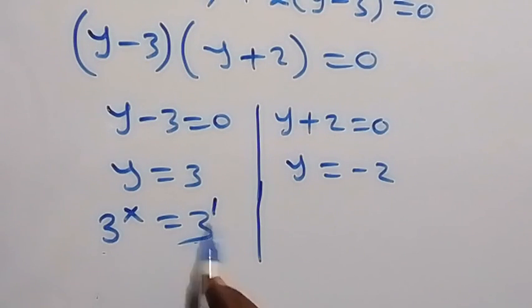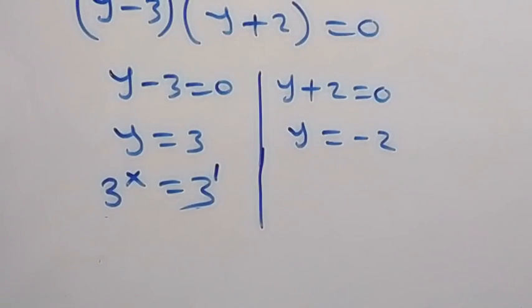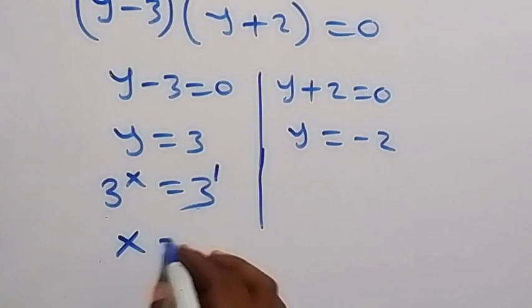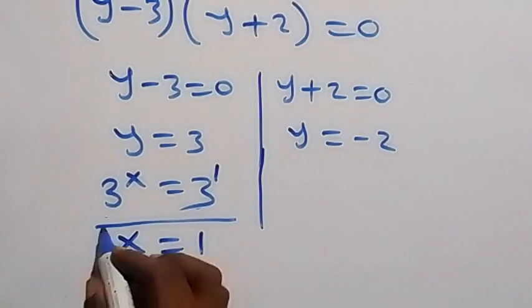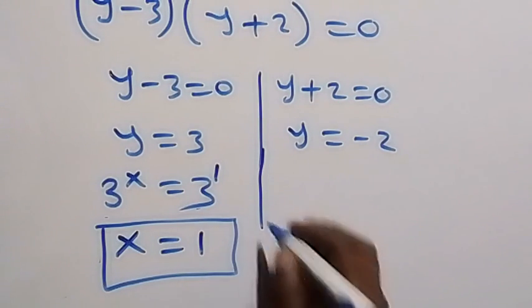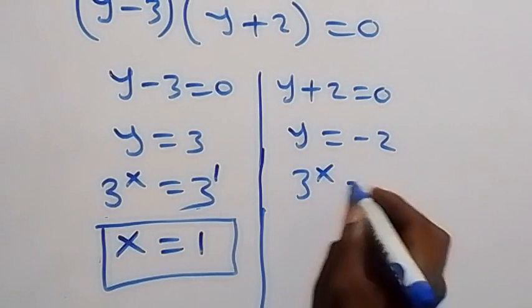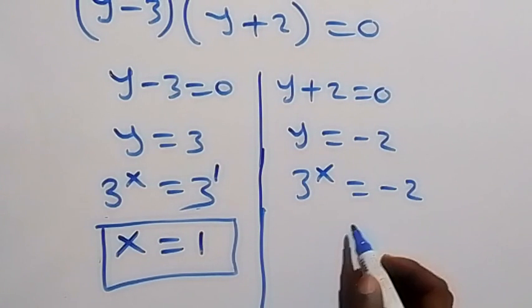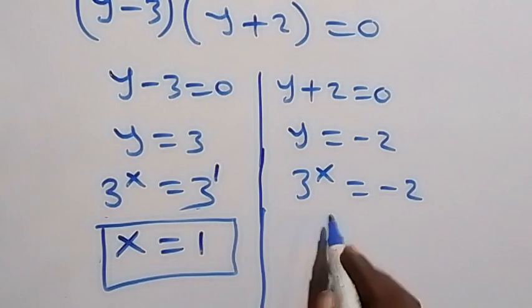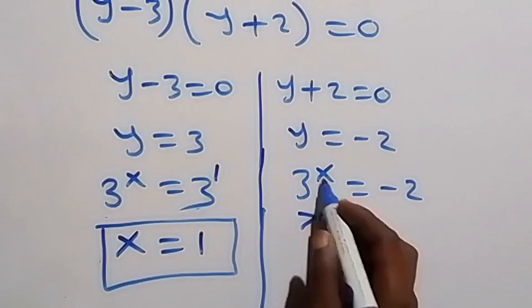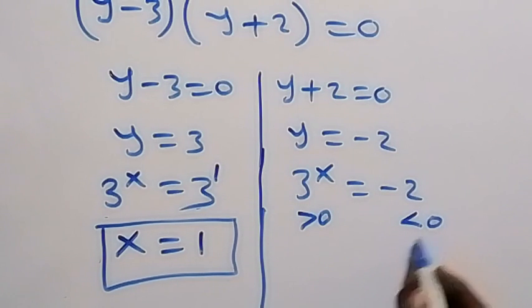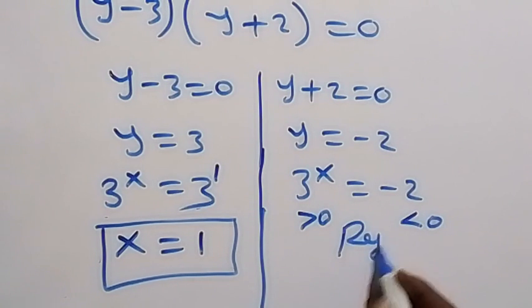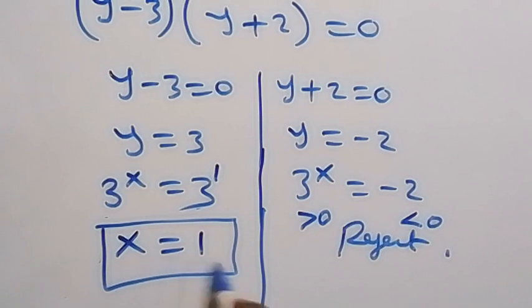From here, x equals 1. And on this side we have 3 raised to power x equals to minus 2. Of course, here it's not possible. This is greater than 0, but minus 2 is less than 0. So we reject this side, and there is no solution here. Then from here we have x equals to 1 as the solution.